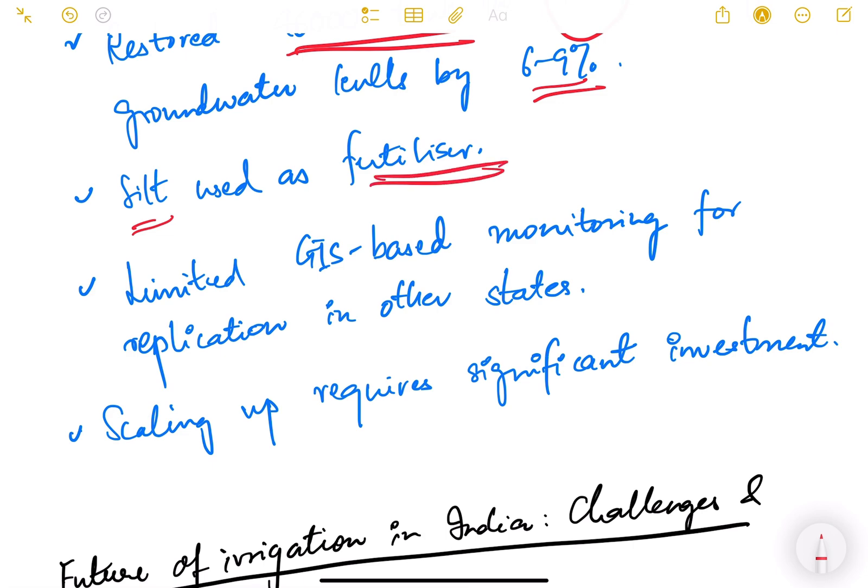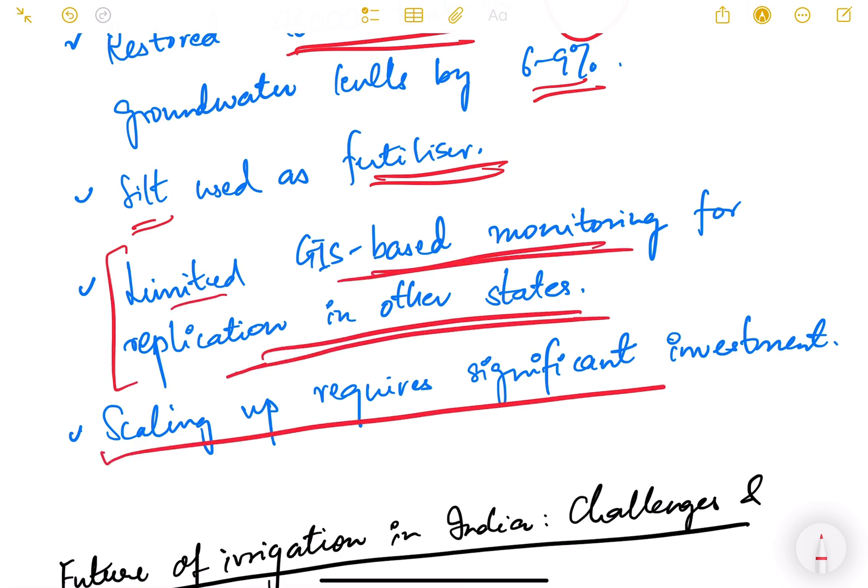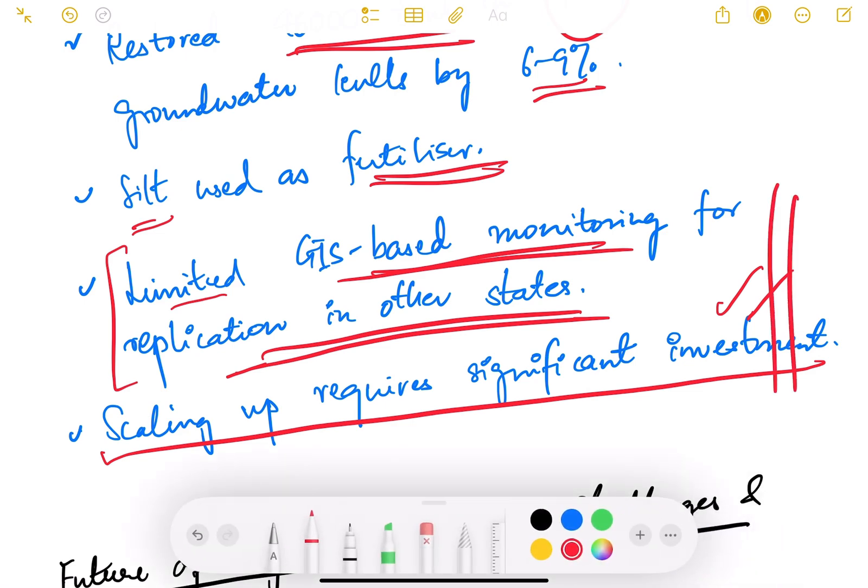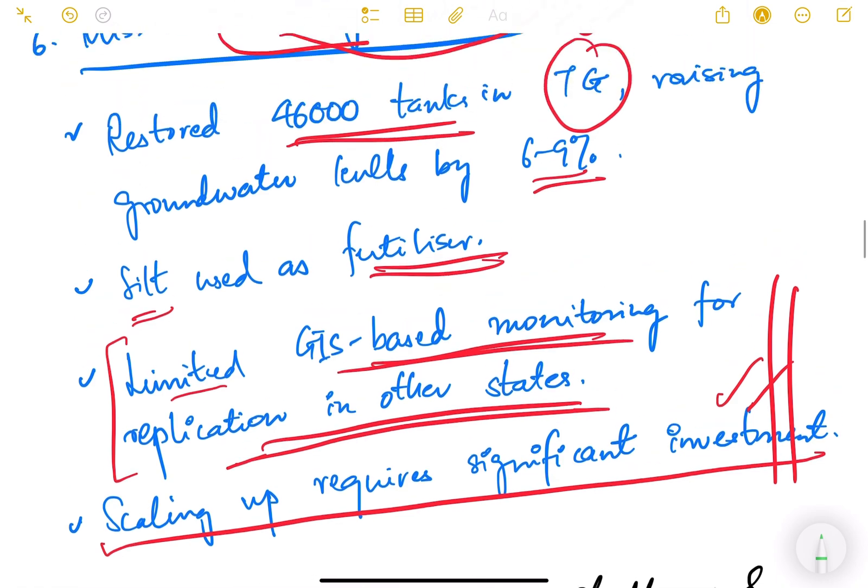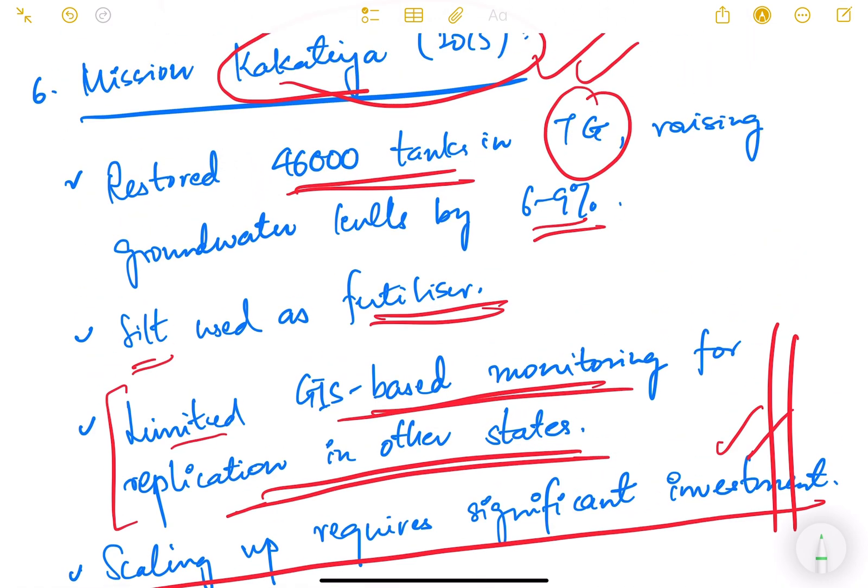However the problem is that there is limited GIS based monitoring for replication in other states and scaling up requires significant investment. All this desiltation and these activities are a little costly, so it needs significant investment. These are some of the challenges which we might face in implementation of this project. However, a very good scheme of the Telangana government.